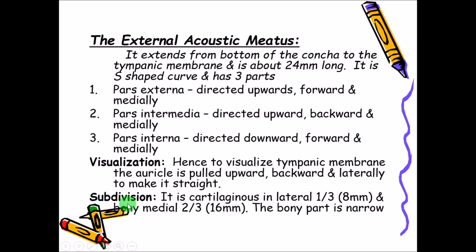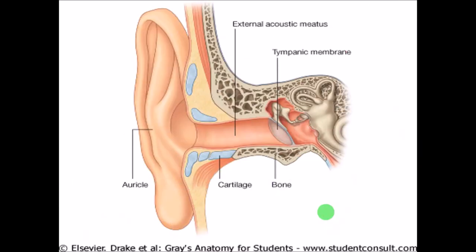The external acoustic meatus is partly cartilaginous and partly bony. The lateral one-third, that is the pars externa, will be cartilaginous and in continuation with the pinna. The medial two-thirds, that is the pars intermedia and pars interna, will be bony. The bony part is comparatively narrower than the cartilaginous part. This is important because if there are any foreign bodies, they will get stuck at the junction of the cartilaginous and bony parts if they are of that size.